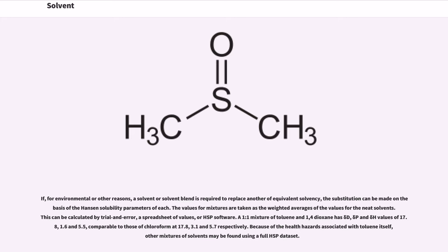The values for mixtures are taken as the weighted averages of the values for the neat solvents. This can be calculated by trial and error, a spreadsheet of values, or HSP software. A 1 to 1 mixture of toluene and 1,4-dioxane has δD, δP and δH values of 17.8, 1.6 and 5.5, comparable to those of chloroform at 17.8, 3.1 and 5.7 respectively.